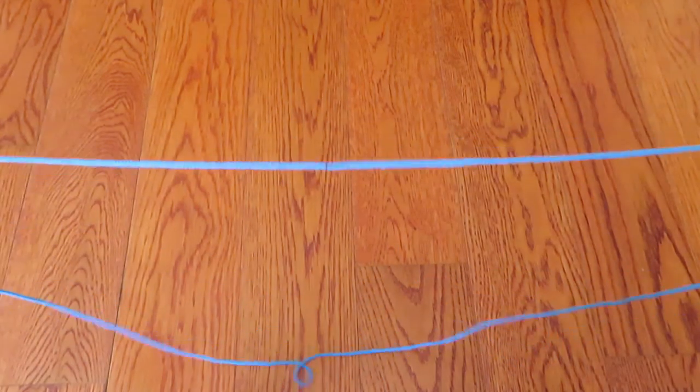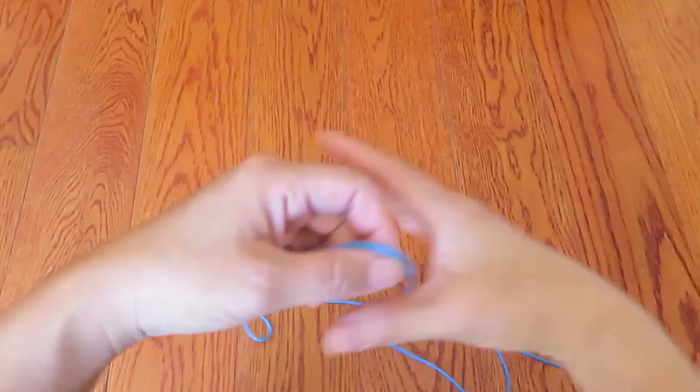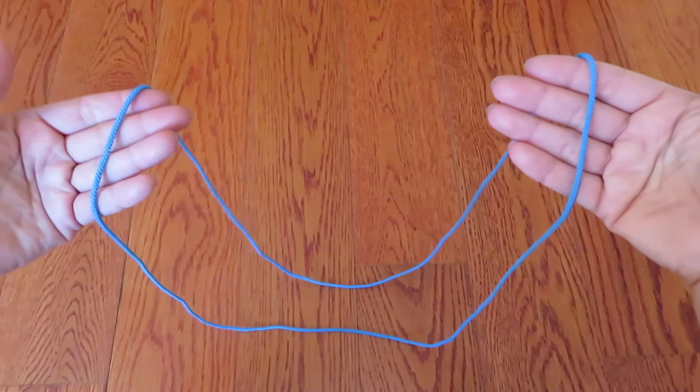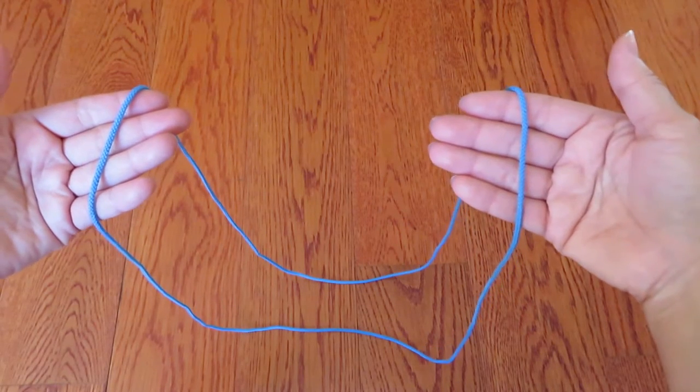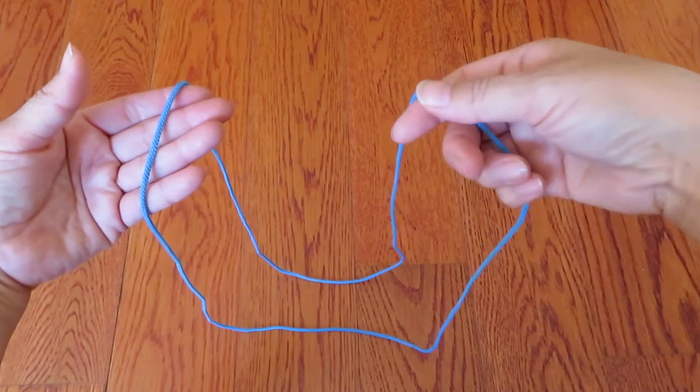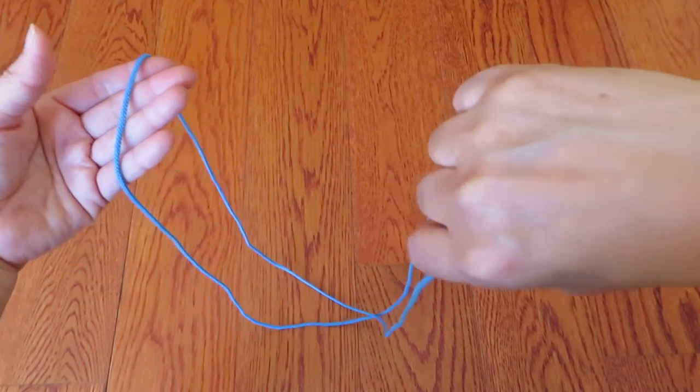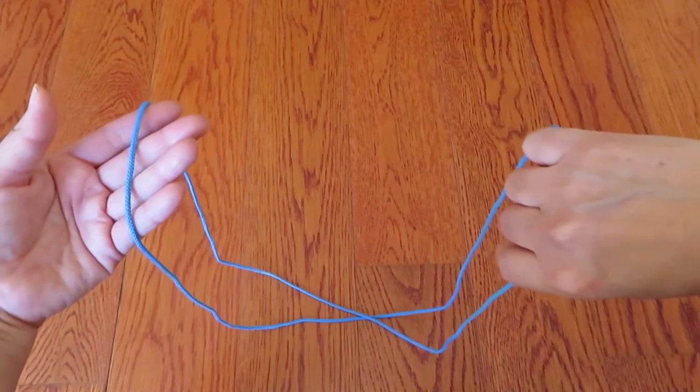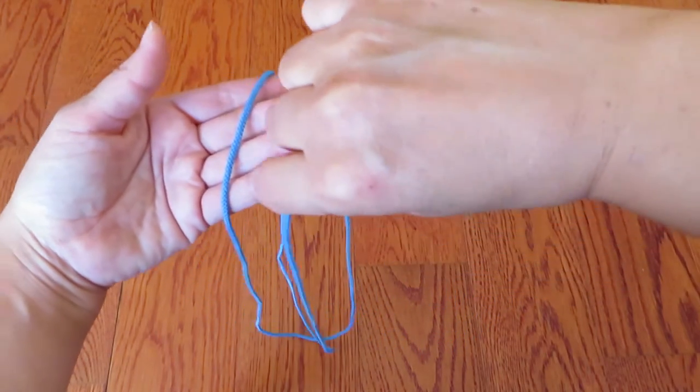So first, let's stretch out a string loop like this, and we are going to twist this loop by twisting the right hand like this, and then pass the string over to the left hand like this.